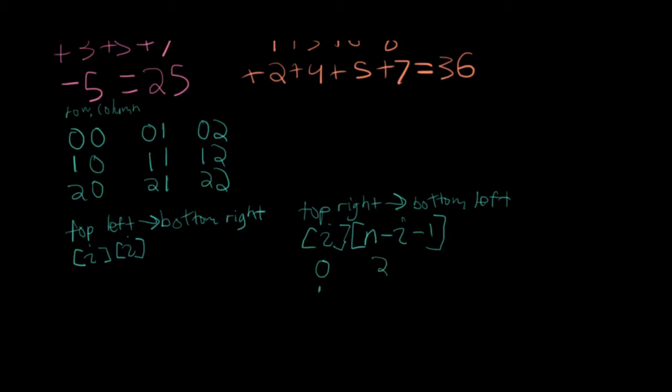Likewise, if i is 1, we would have 3 minus 1 minus 1, which is 1. And then finally, when i is 2, 3 minus 2 minus 1 is 0. So that's how we can get from the top right to the bottom left.